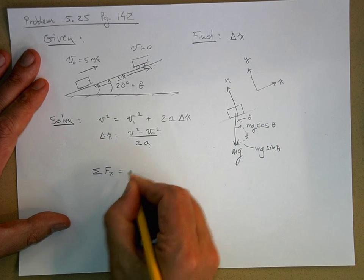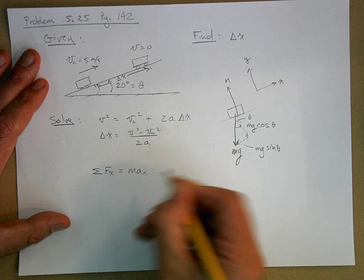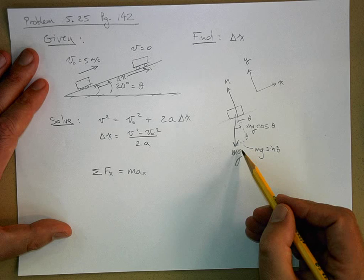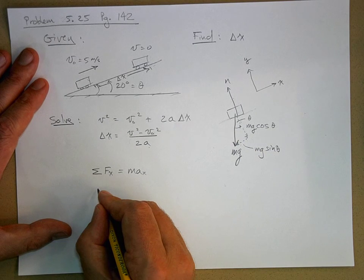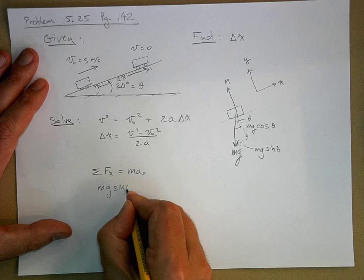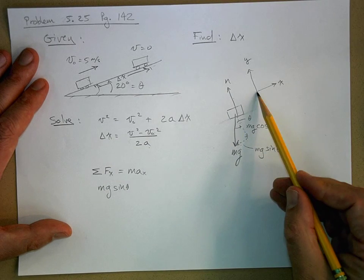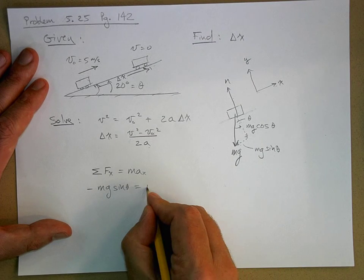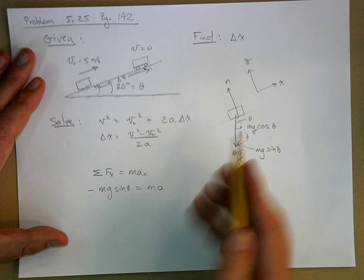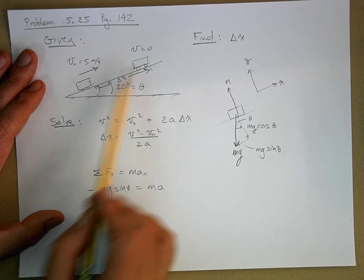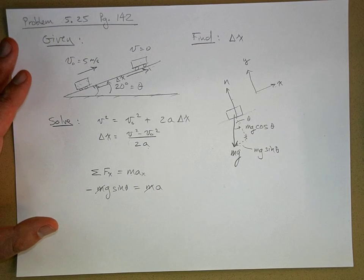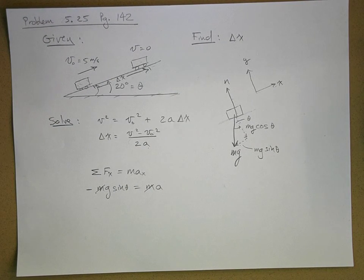So sum the forces in the x direction equals ma in the x direction. And so here's the only force in the x direction is the component of the weight, mg sine theta. But the way I drew this, notice that this is in the negative x direction. So I'll put a negative out there. Equals ma. And look, they didn't give us the mass of that car, did they? Don't need to. It cancels out. But if the mass of the car, the object is not given, that probably means it's going to cancel out later on.